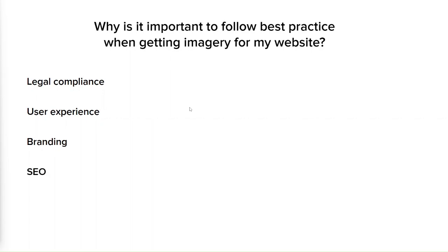Properly optimized images can also help improve your website's search engine rankings. By including relevant alt text and descriptions, search engines can better understand the content of an image, leading to better visibility in search results. Following best practices when getting images can help you avoid legal complications, enhance user experience, establish a strong brand identity and improve your search engine rankings.